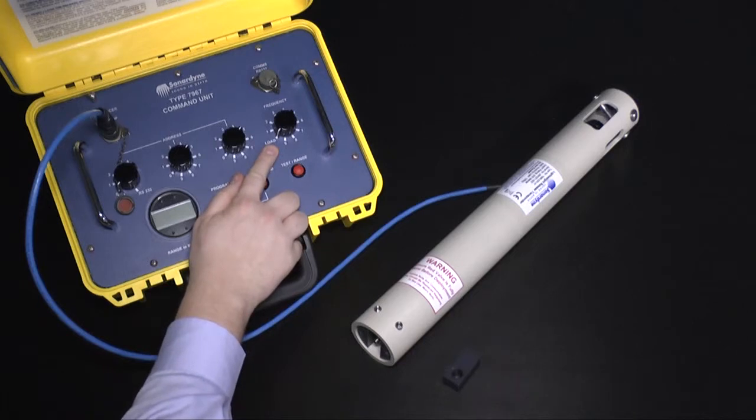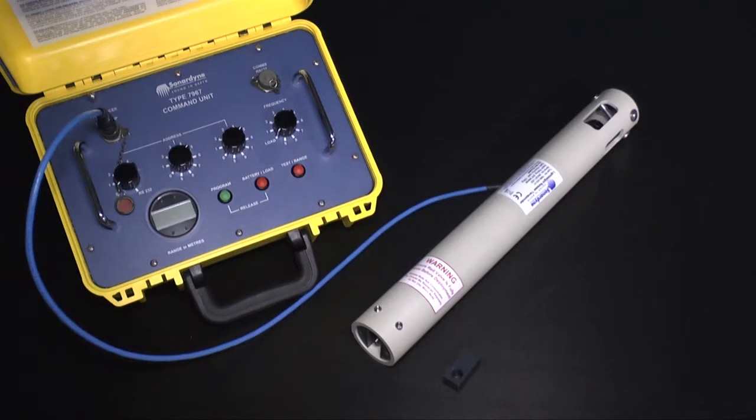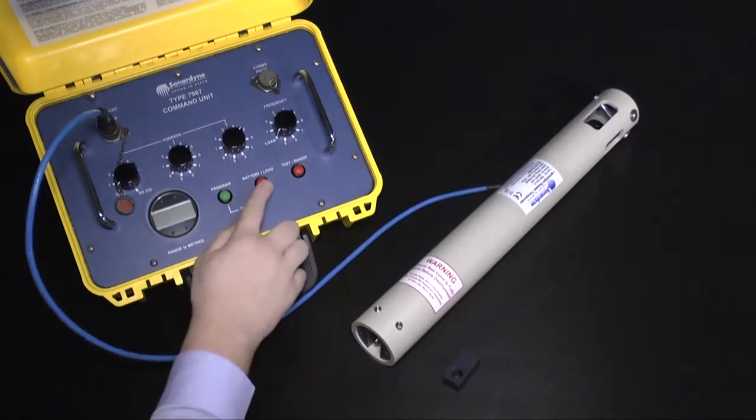Using the right hand frequency rotary dial, select the load position. Make sure you have the release nut to hand and press the battery/load button on the command unit.